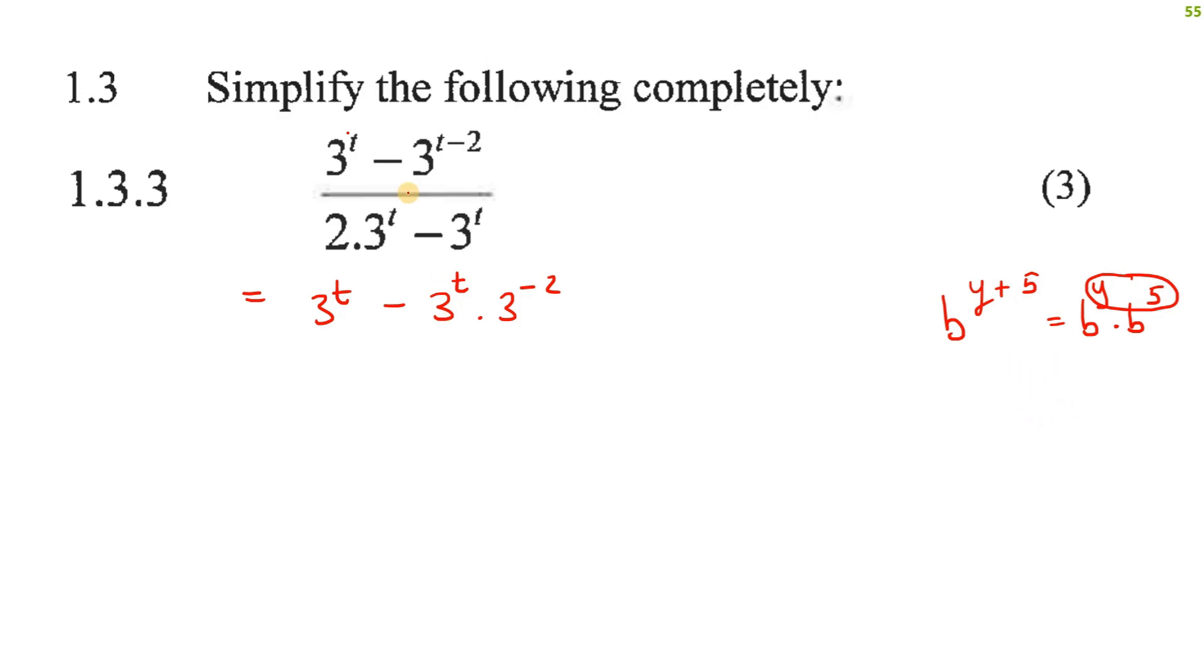So in this kind of scenario, it helps us to take this and then break it up into its individual parts. You'll see why shortly. And then never change this to a 6, by the way, and never think of it as 2.3. It's 2 multiplied by 3 to the t. But it doesn't become 6 because this little t will get in the way.